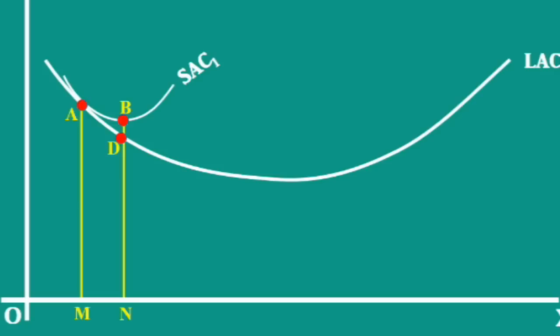We know each point on the long run average cost curve represents a plant with its own short run average cost curve. So, at point D there is a plant with short run average cost curve SAC2.